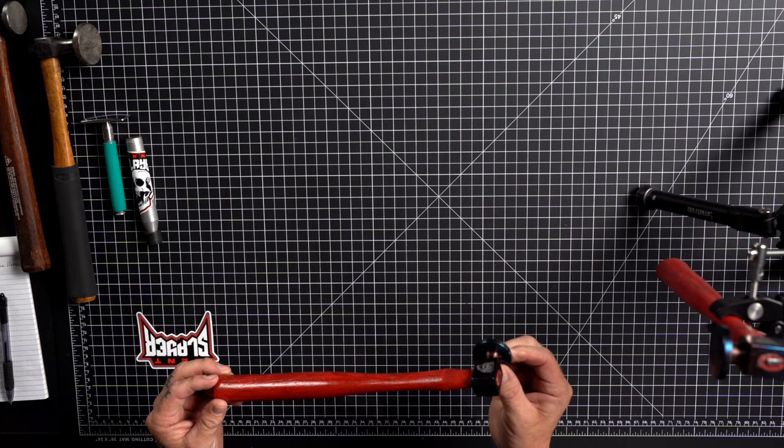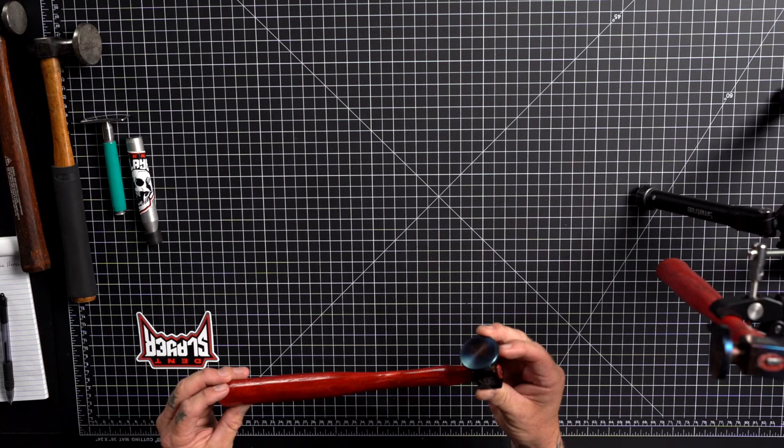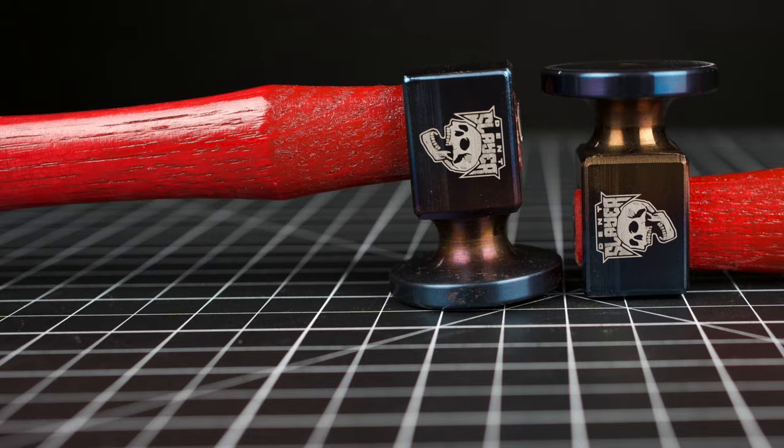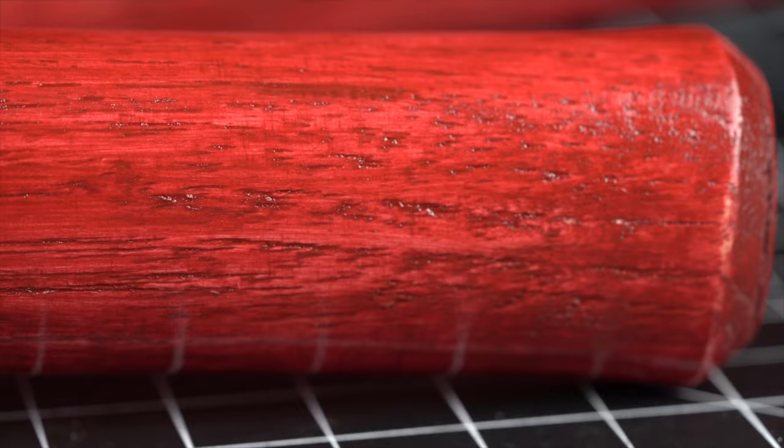When you do that, it gives it this kind of rainbow effect of colors. They're all going to have slight variations in the tone, but they're all going to be essentially the same as far as the overall look of them. It has this lasered logo on each side, the Dent Slayer logo.